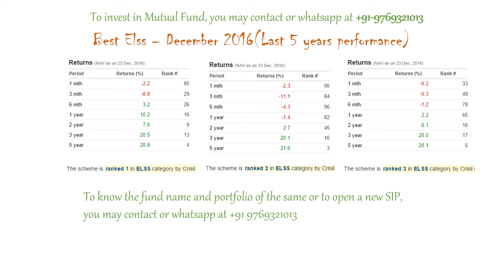Here are the top 3 ELSS schemes as on 23rd December 2016, displaying the last 5-year performance. The first scheme delivered 20.8% CAGR in the last 5 years and is ranked 1 in the ELSS category by CRISIL. The second scheme delivered 21.6% CAGR and is ranked 2 by CRISIL, while the third scheme delivered 20.8% CAGR and is ranked 3 in the ELSS category.